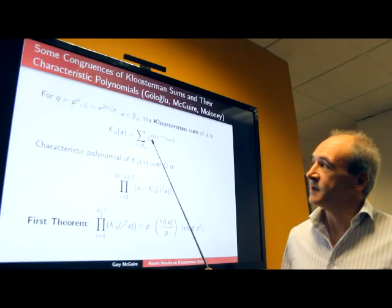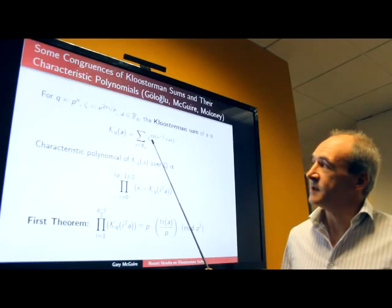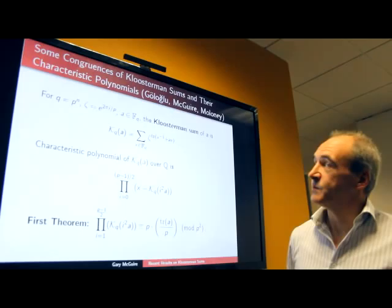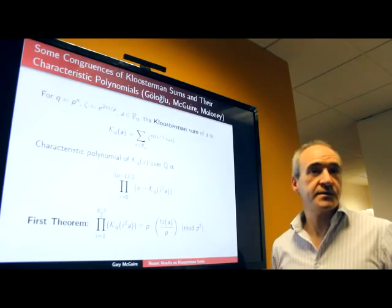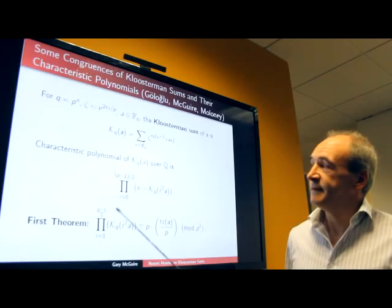Kluisterman's sum over a finite field is this object here, a sum over zeta, zeta is a complex primitive p-th root of unity, a trace of x inverse plus ax, and we sum over all x in fq. We include 0, some authors do not include 0 in the sum, 0 inverse is 0 for us.